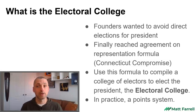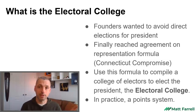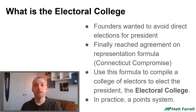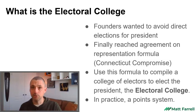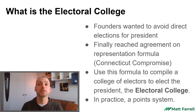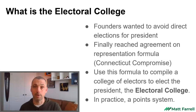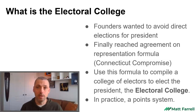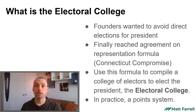Rather than start again, they simply took that template, that formula, and opted to create a new body every four years that was numerically identical to Congress, called the Electoral College. In practice, that works out to more of a point system, but at the time it was a body of people constituted every four years to elect the President.